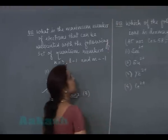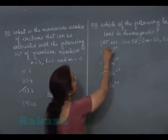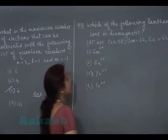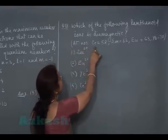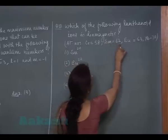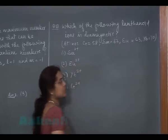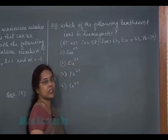The next question is question number 18. Which of the following lanthanoid ions is diamagnetic? Atomic numbers are given: cerium 58, samarium 62, europium 63, and ytterbium 70.